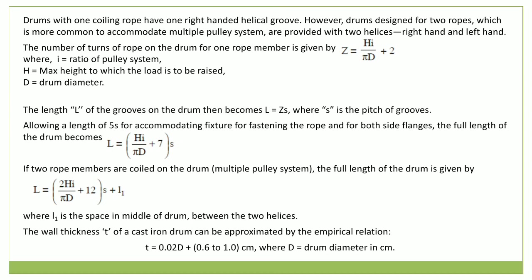If two rope members are coiled on the drum for a multiple pulley system, the full length of the drum will be: (2Hi/πd + 12) × S + L₁, where L₁ is the space between the two helices on the drum. The wall thickness of a cast iron drum is given by: t = 0.02D + 0.6 to 1 cm, where D is the drum diameter in centimeters. The fastening arrangement of the rope end on the drum is a very essential feature. A popular method is to fix two turns of the rope by a steel plate pressed toward the drum by means of a screw or stud. This steel plate is provided with part grooves made on the bottom side to fit on the two turns of the rope.